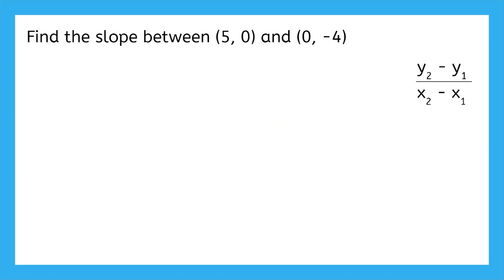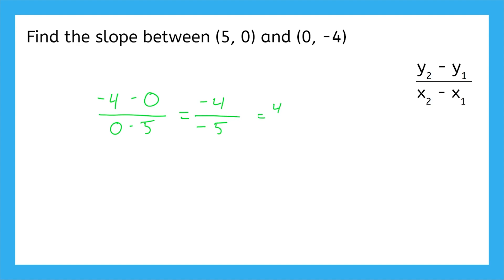The last one — don't get tripped up by 0. Remember, it's just another number on the number line. Negative 4 minus 0 over 0 minus 5. Negative 4 minus 0 is still negative 4, and 0 minus 5 is negative 5. 4 doesn't divide evenly by 5, but a negative divided by another negative will always be positive, so the slope would be positive 4 over 5.